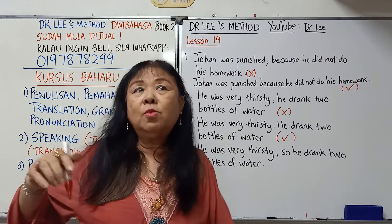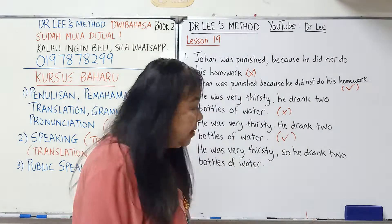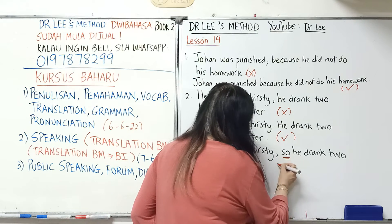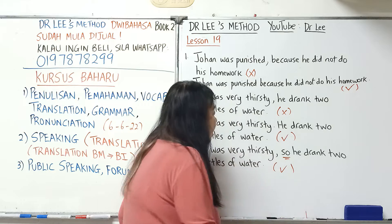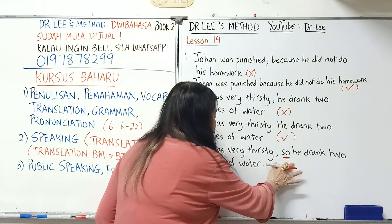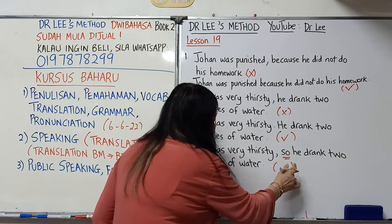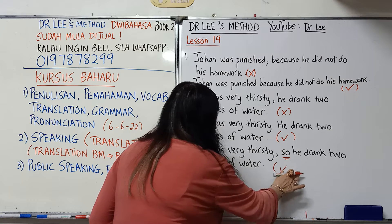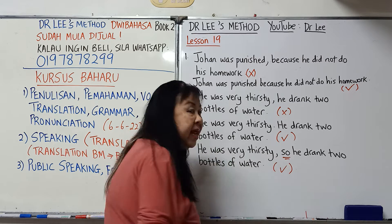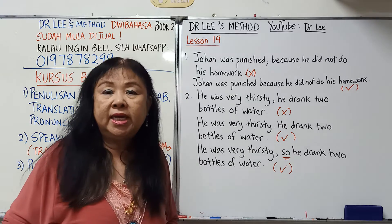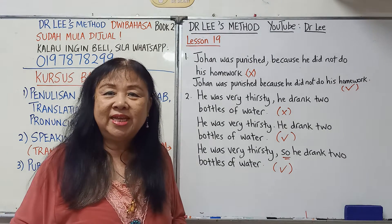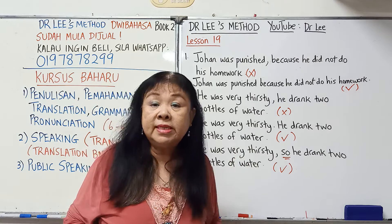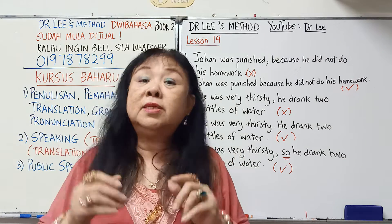当然，如果你想写一个长句，可以加一个 so。so 就是把两个句子连接成一个，那逗号就不需要了。你只是加一个 so，就是说：他很口渴，所以他喝了两瓶水。这样就是对的。